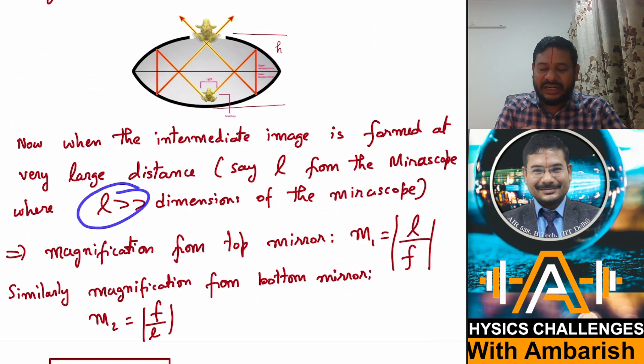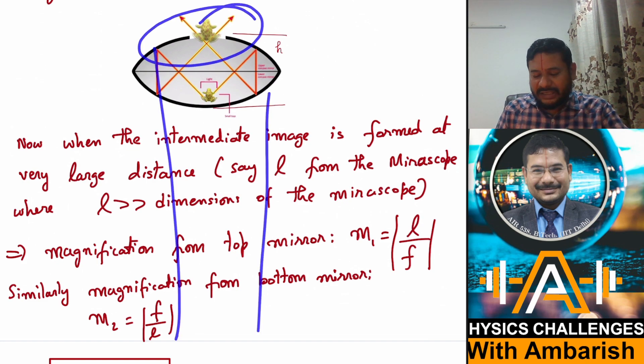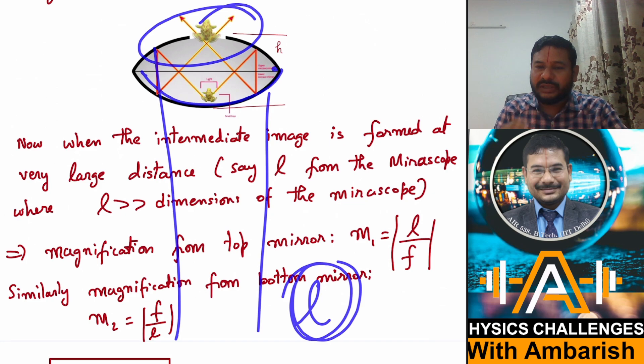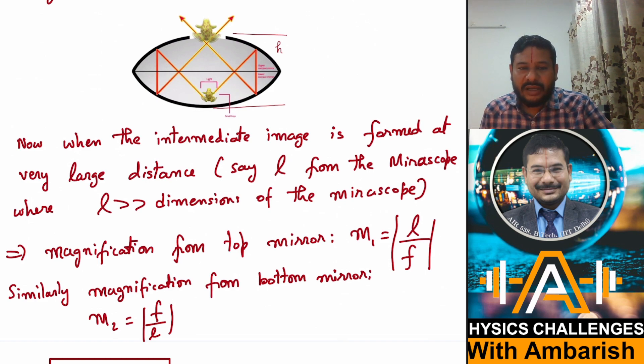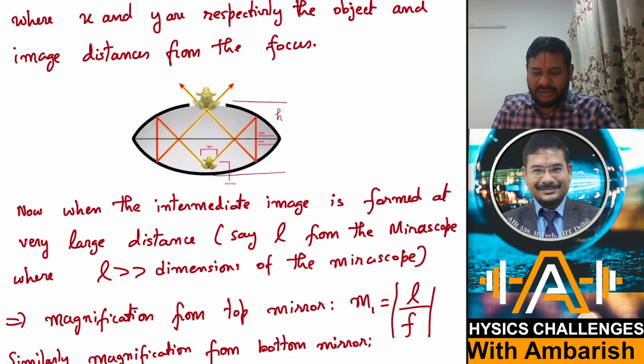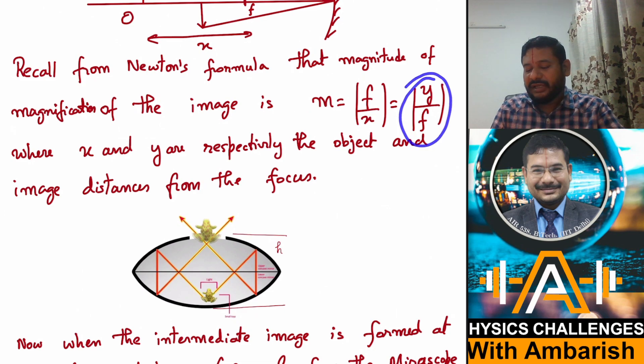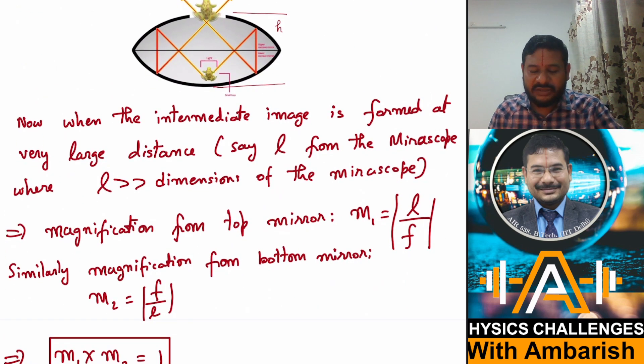So let us say, so that is the intermediate image. So image formed by the upper mirror is formed L distance here. And this is serving as object for the lower mirror. So what is the magnification for the upper mirror? So for the upper mirror, we use the F by X formula - rather, sorry, we use the Y by F formula. See, if the image is at Y, then magnification is Y by F. So for the upper mirror, the image is formed at L. So first magnification from the top mirror is L by F, right? Where L is a very, very large number.